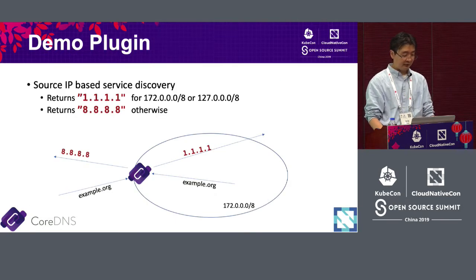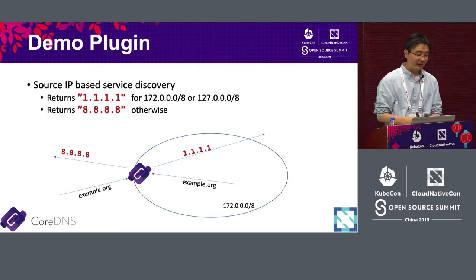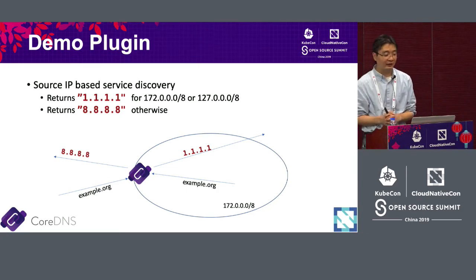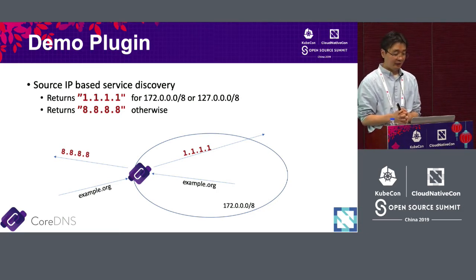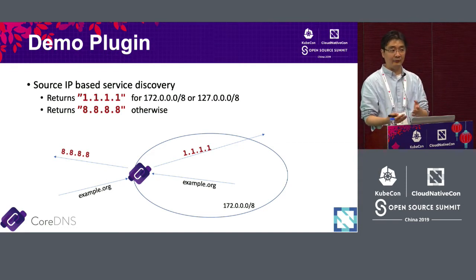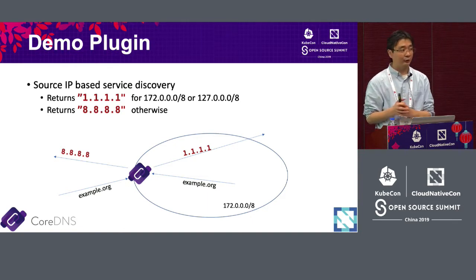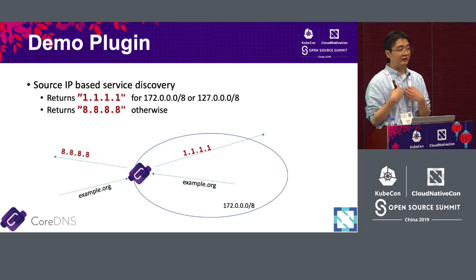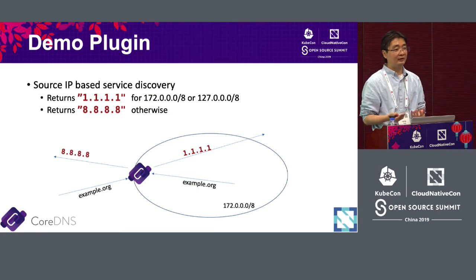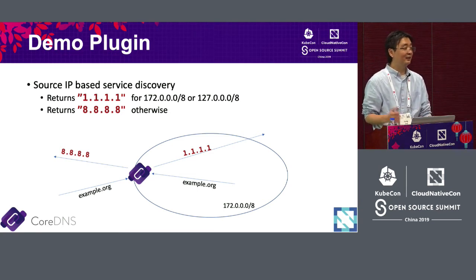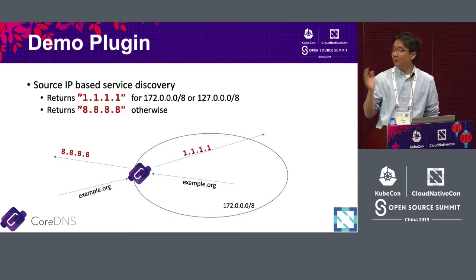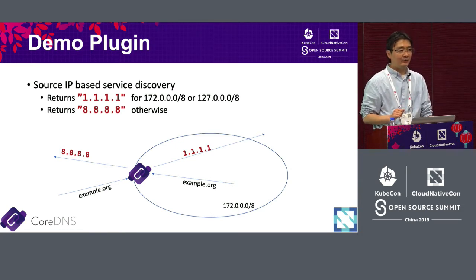Now let's get to the demo. The demo plugin is a very simple thing — it's a source IP-based service discovery. We talk about service discovery and CoreDNS — so what exactly is service discovery? Service discovery is essentially a way to resolve an endpoint to an IP address. If you have a service and know the IP is static, that's a one-to-one match, but there are complications that make service discovery more interesting.